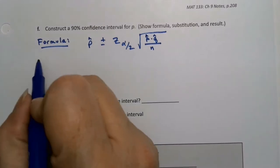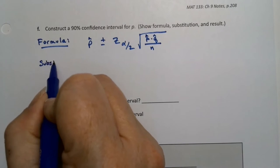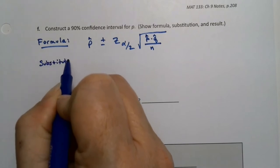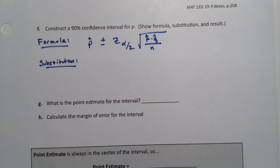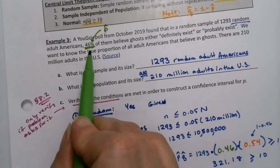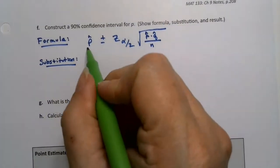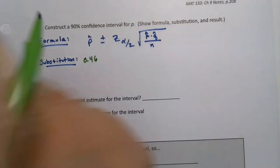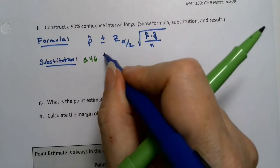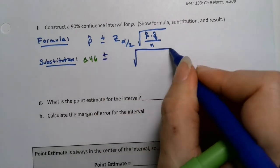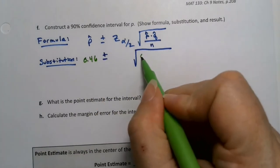Now what about the substitution, the heavy lifting here? Well, I already know what P hat is because we said so a while ago. P hat was given to us in the problem. It's 0.46 right there. So everywhere there's a P hat in the formula, I can put a 0.46. So that's a 0.46 plus or minus, leave myself some space here.